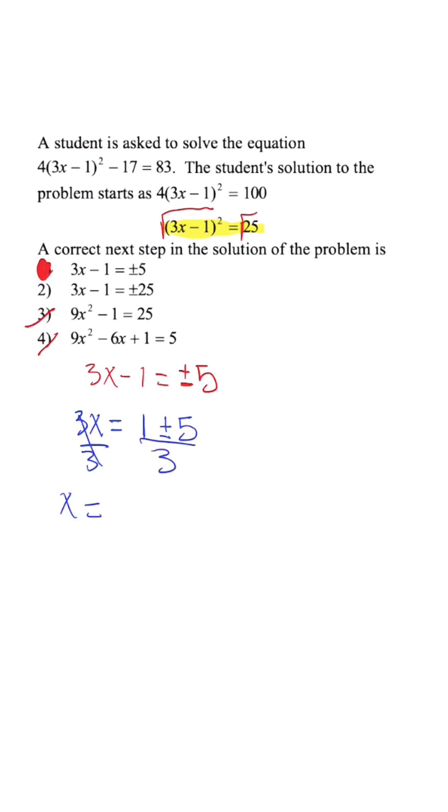So our expression is x is equal to 1 plus or minus 5, over 3. So my first x is 1 plus 5, which is 6, 6 divided by 3 is 2. So we know x is equal to 2.